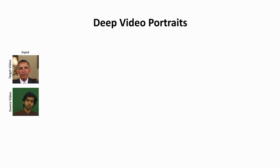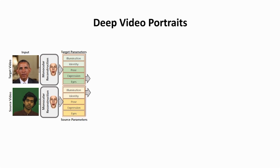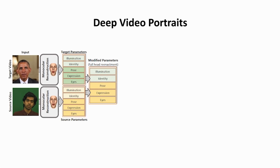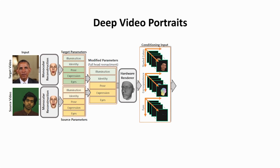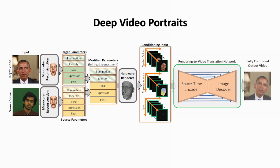Given an input video, we first track the source and target actors using a phase reconstruction approach. The resulting parameter vectors represent meaningful semantic dimensions such as the head pose, facial expression and eye motion. These can be directly transferred from the source to the target. Next, we render synthetic images of the modified target actor rig. Finally, we employ our novel rendering-to-video translation network that converts space-time volumes of such conditioning input into photorealistic video portraits.